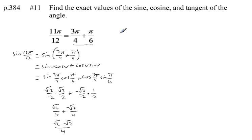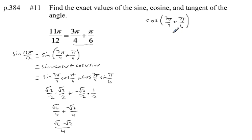Now we need to find the cosine of 11π/12, which is the cosine of 3π/4 plus π/6. I can use my sum formula: the cosine of u plus v equals the cosine of u times the cosine of v minus the sine of u times the sine of v.